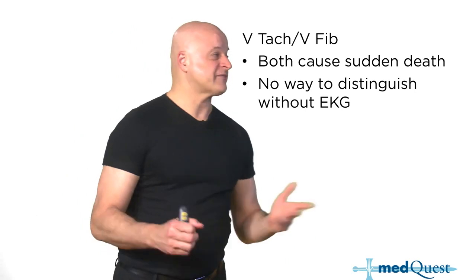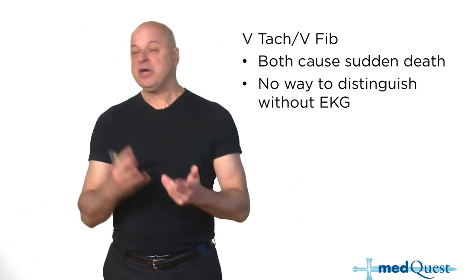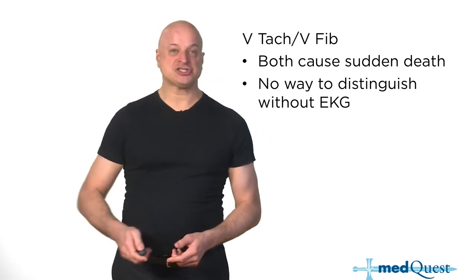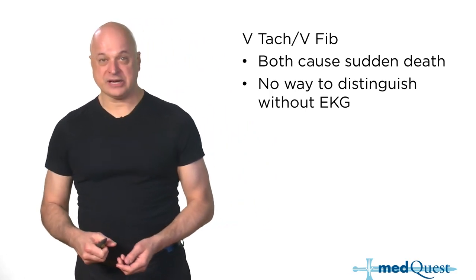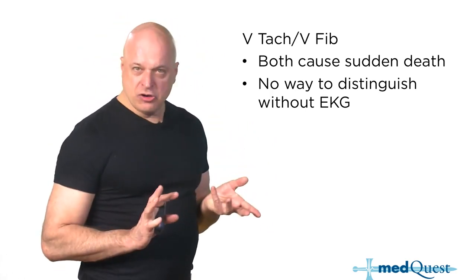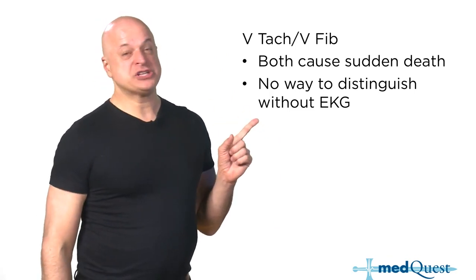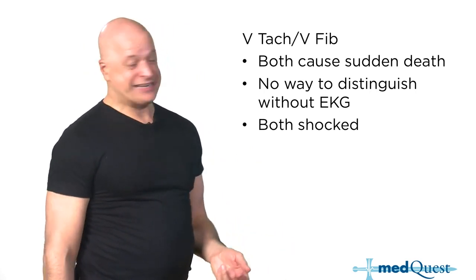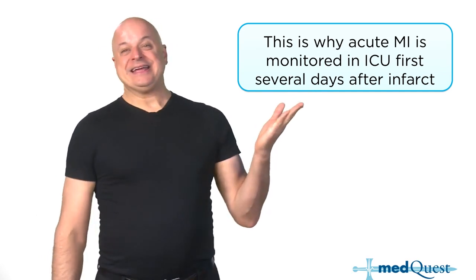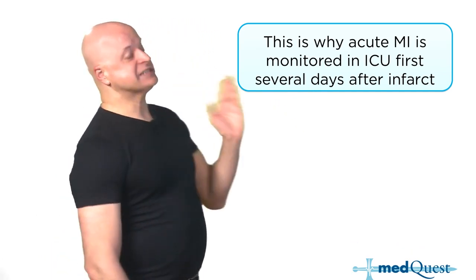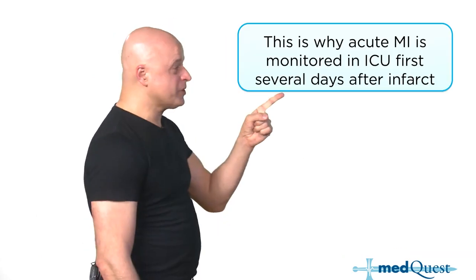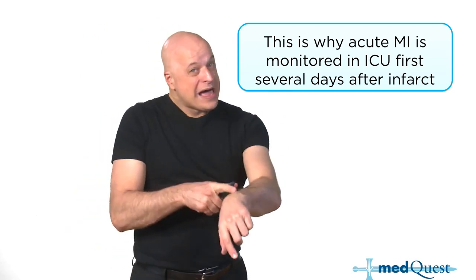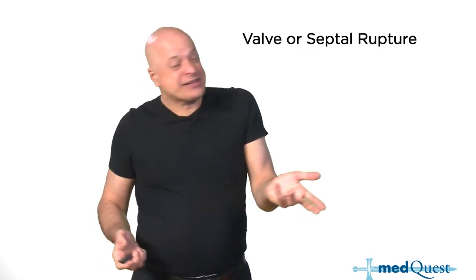If there's loss of pulse, you can't tell VTAC from VFib apart because both can cause sudden death. Calling for help and getting the automatic external defibrillator is the most important thing — it's the only way to tell which one you have. Both VTAC and VFib without a pulse are going to get shocked, not pulseless electrical activity.